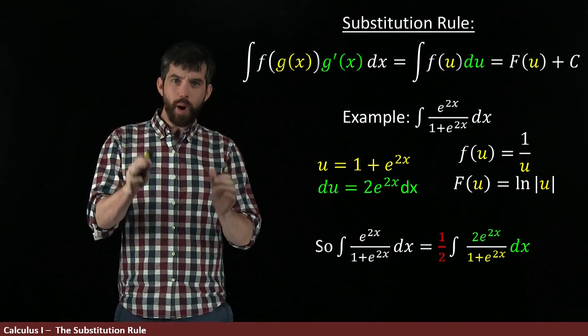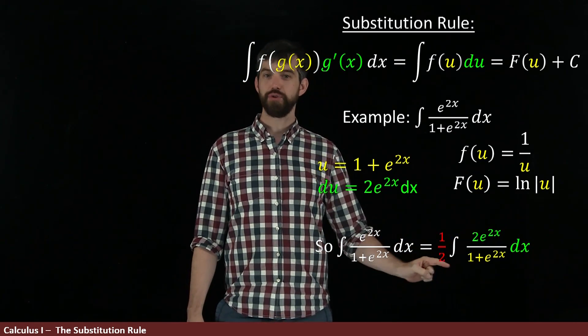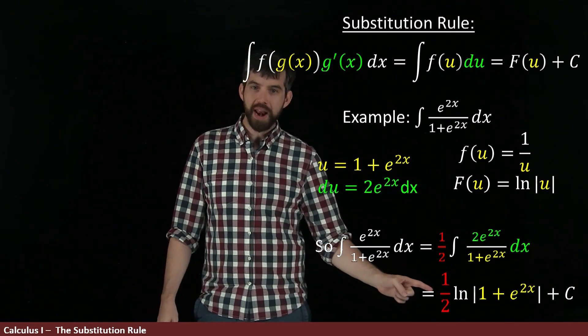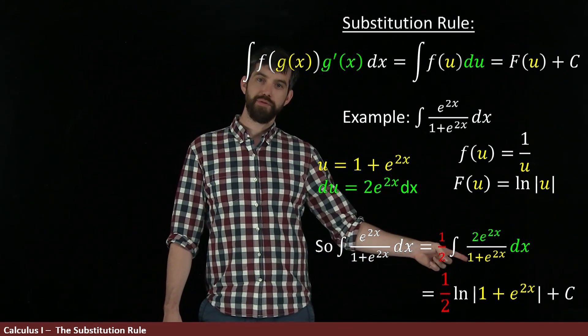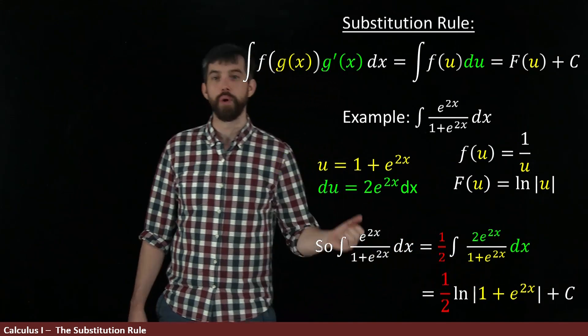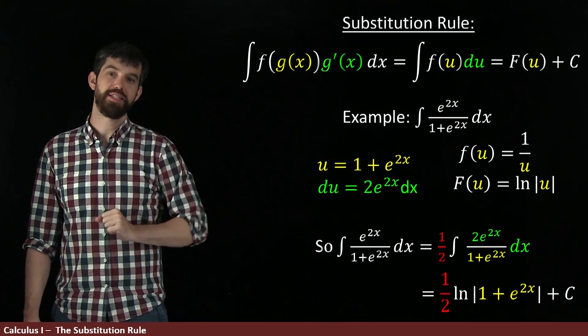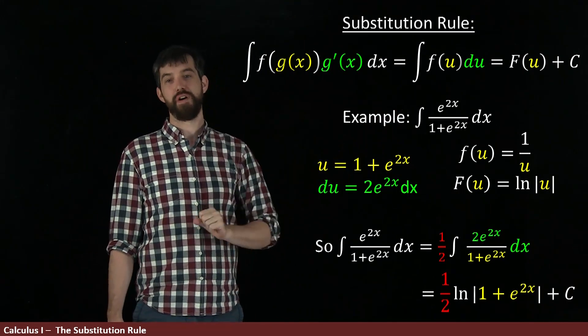That is, what I have done is managed to write this as 1 half the integral of 1 over u du. So we get the 1 half that just comes along for the ride. The integral of 1 over u becomes a natural logarithm, and I evaluate it at u where u is this 1 plus e to the 2x, and finally I add in the plus c. So that is going to be my general anti-derivative to this funky expression.